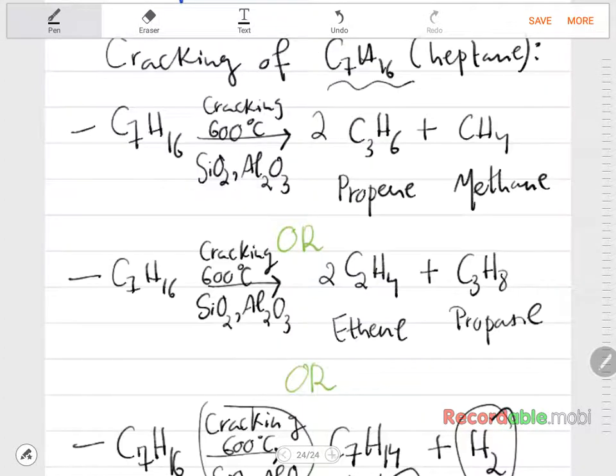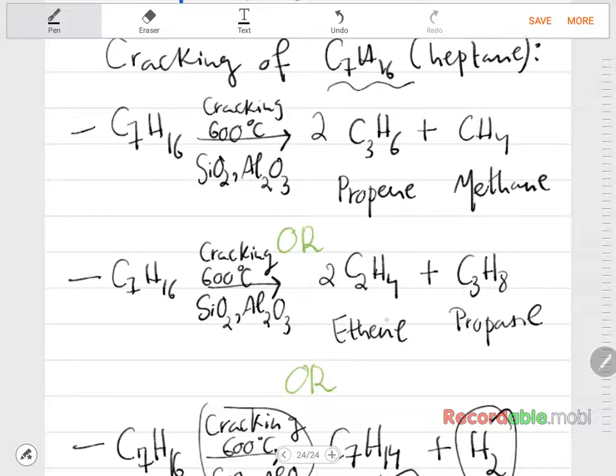And of course you need to write the conditions. Now I have another option: you have seven, you can split it to ethene and propene, but in this case the equation won't be balanced, so you add the two to balance the equation.